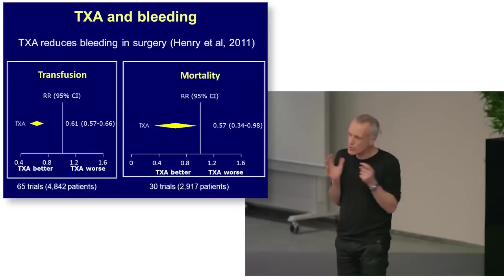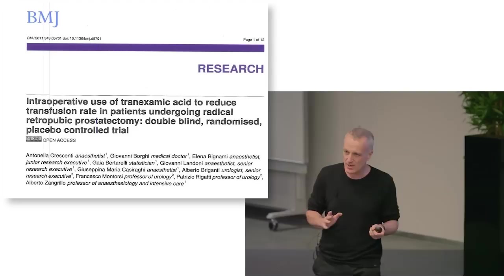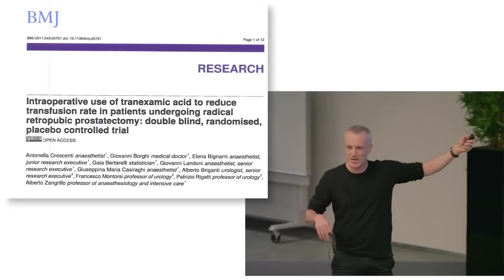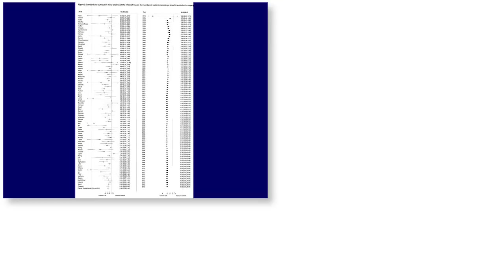The interesting thing is this result is outrageously precise, because there have been lots and lots of randomised controlled trials. There was one at Christmas in the BMJ — tranexamic acid to reduce transfusion in patients undergoing surgery on the prostate. They've done randomised controlled trials of surgeries all over the body. They found that giving tranexamic acid when you do an operation on the prostate reduces blood loss.